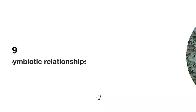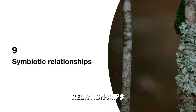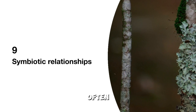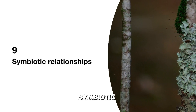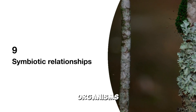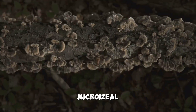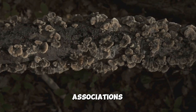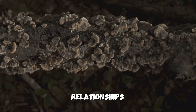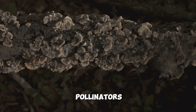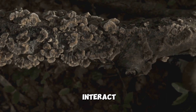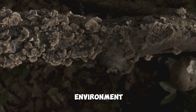9. Symbiotic Relationships: Plants often form symbiotic relationships with other organisms. Mycorrhizal associations with fungi and relationships with pollinators are examples of how plants interact with the environment.